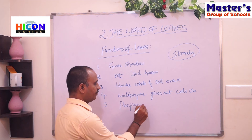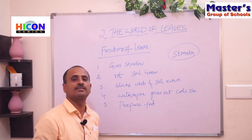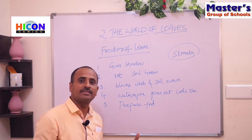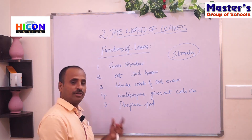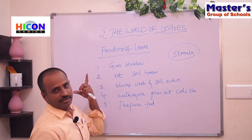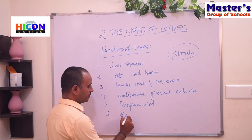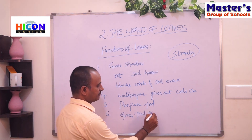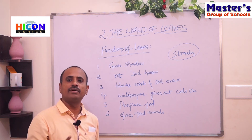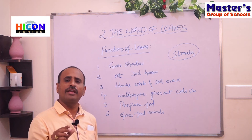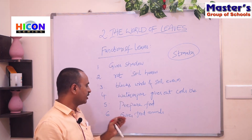An important function of leaves is preparing food for the plant. By using photosynthesis — in the presence of sunlight — leaves mix water, minerals, and carbon dioxide to prepare food called glucose. Leaves also provide food for animals; herbivores, the animals which eat only plants and grasses, eat the leaves of plants for nutrition.